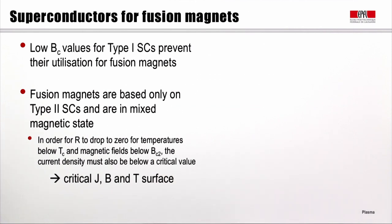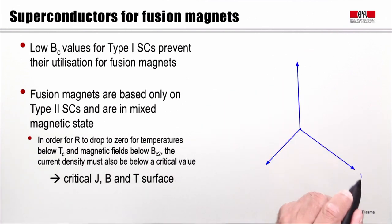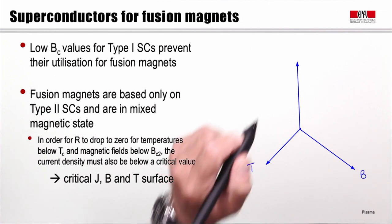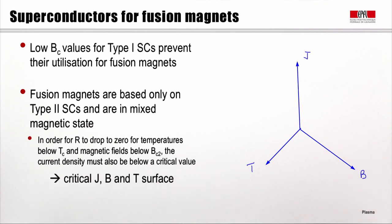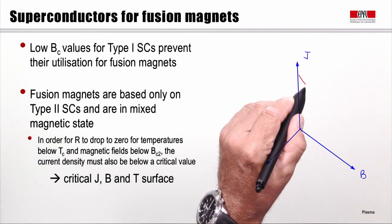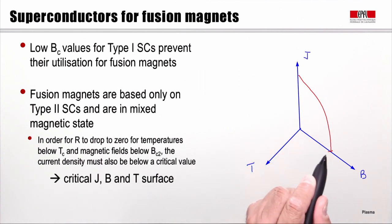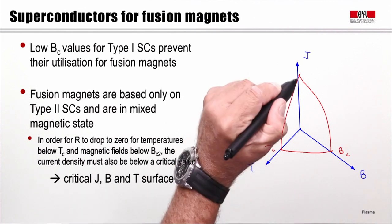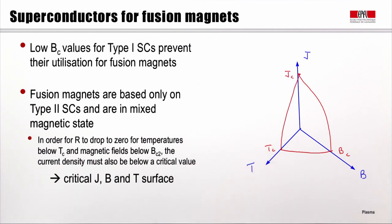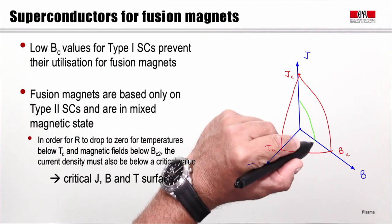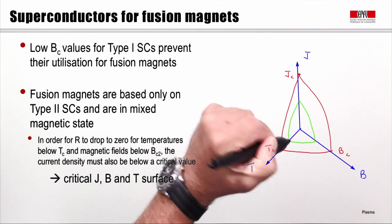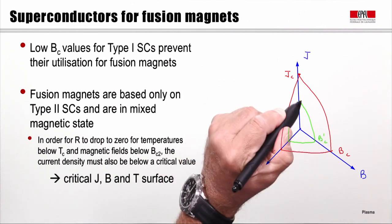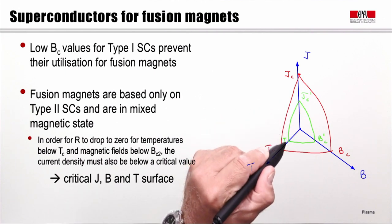In a 3D plot with B on one axis, temperature on another, and current density on the vertical axis, superconductivity is defined within a surface limited by corresponding critical values BC, TC, and JC. Different materials have slightly different shapes and limitations for this critical surface — for example, a material with a smaller critical surface with its own BC', JC', and TC'.